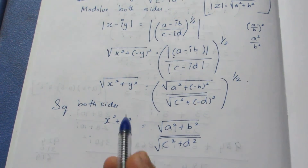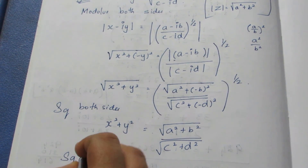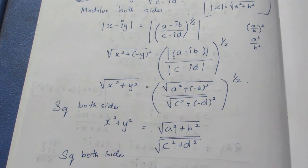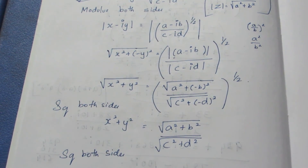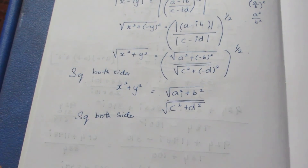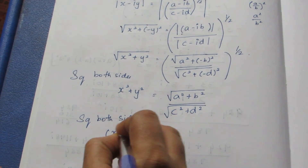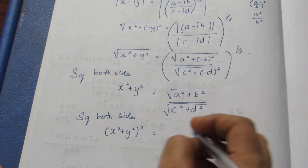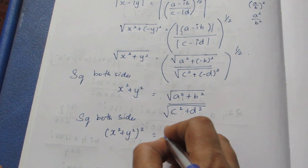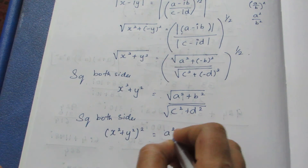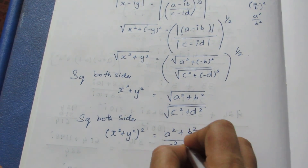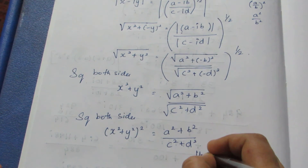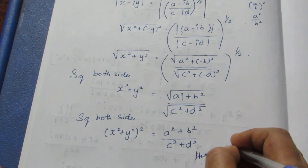So again I am going to square both sides, squaring again. Only then I can get x square plus y square the whole square. So squaring both sides gives x square plus y square, the whole square. On the right side, square and root get cancelled, and it becomes a square plus b square by c square plus d square. This is what we need to prove, hence proved.